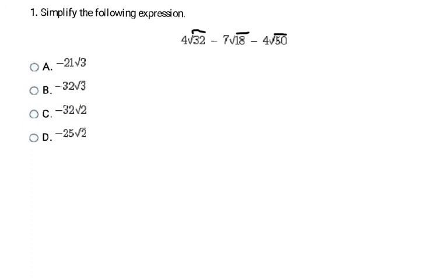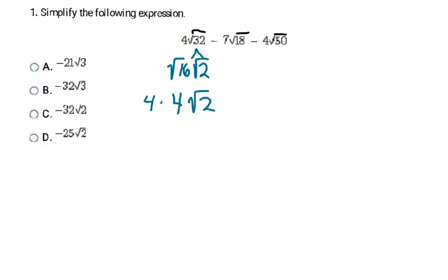Looking at the first example, to subtract these we need the same numbers underneath the square root. We have 32, 18, and 50 — none of those can be combined directly, so we simplify each one. For 32, the largest perfect square that divides into it is 16, since 16 times 2 equals 32. The square root of 16 is 4, and we had a 4 out front, so 4 times 4 gives us 16√2.